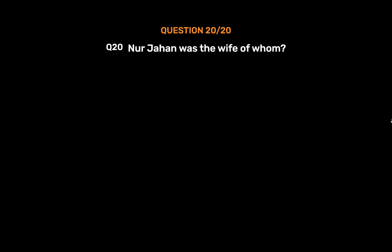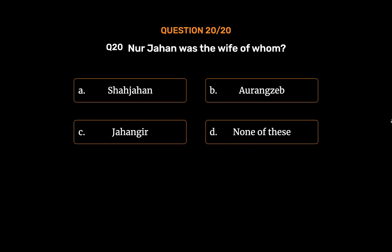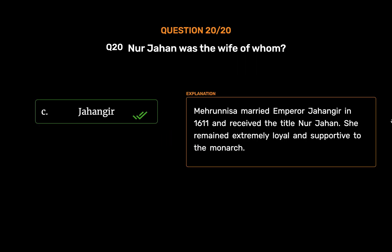Question 20: Noor Jahan was the wife of whom? Option A: Shah Jahan. Option B: Aurangzeb. Option C: Jahangir. Option D: None of these. The correct answer is Option C, Jahangir. Mehrunnisa married Emperor Jahangir in 1611 and received the title Noor Jahan. She remained extremely loyal and supportive to the monarch.